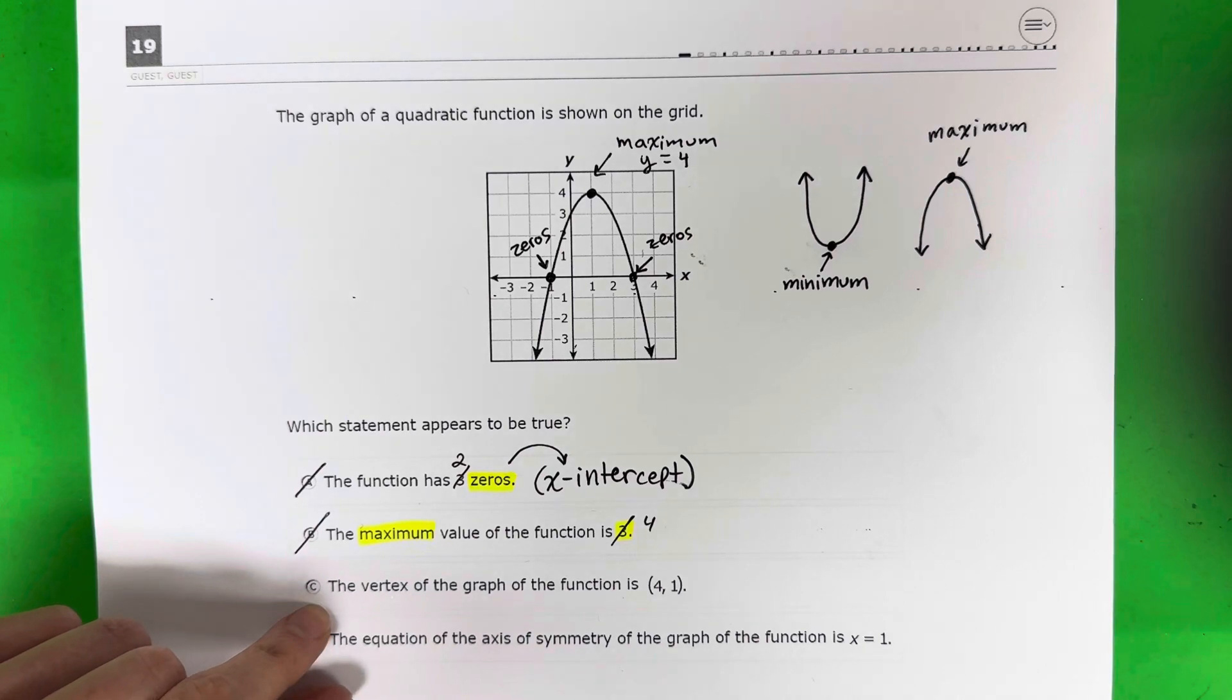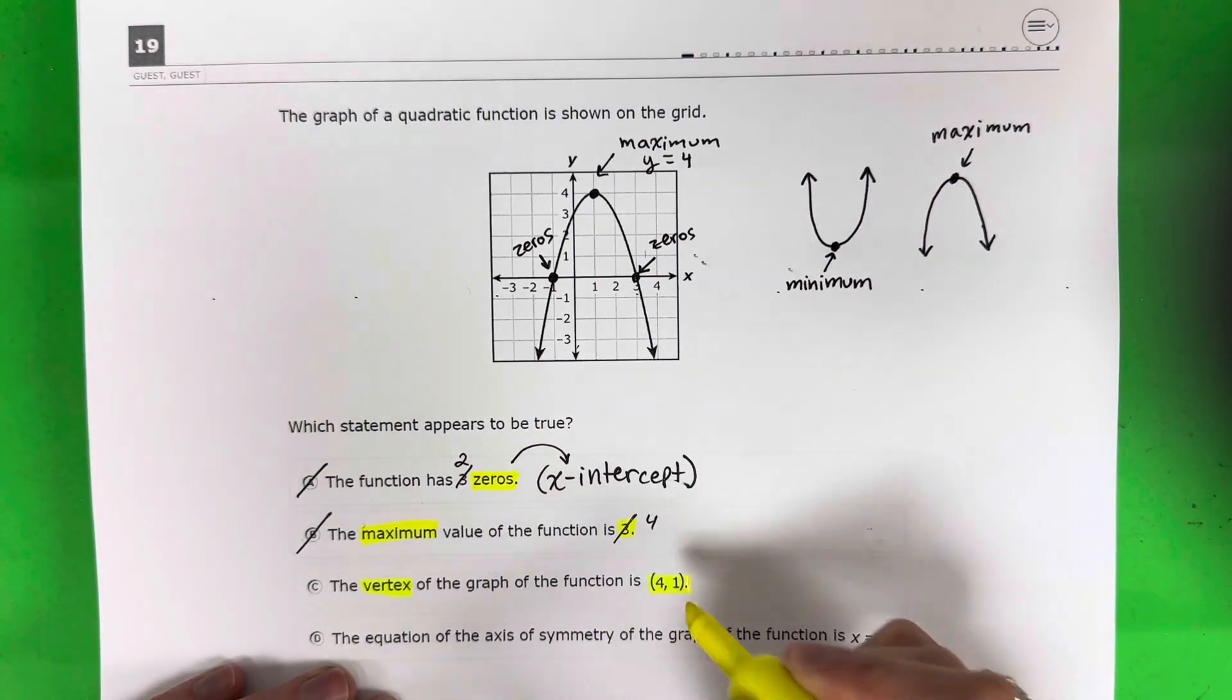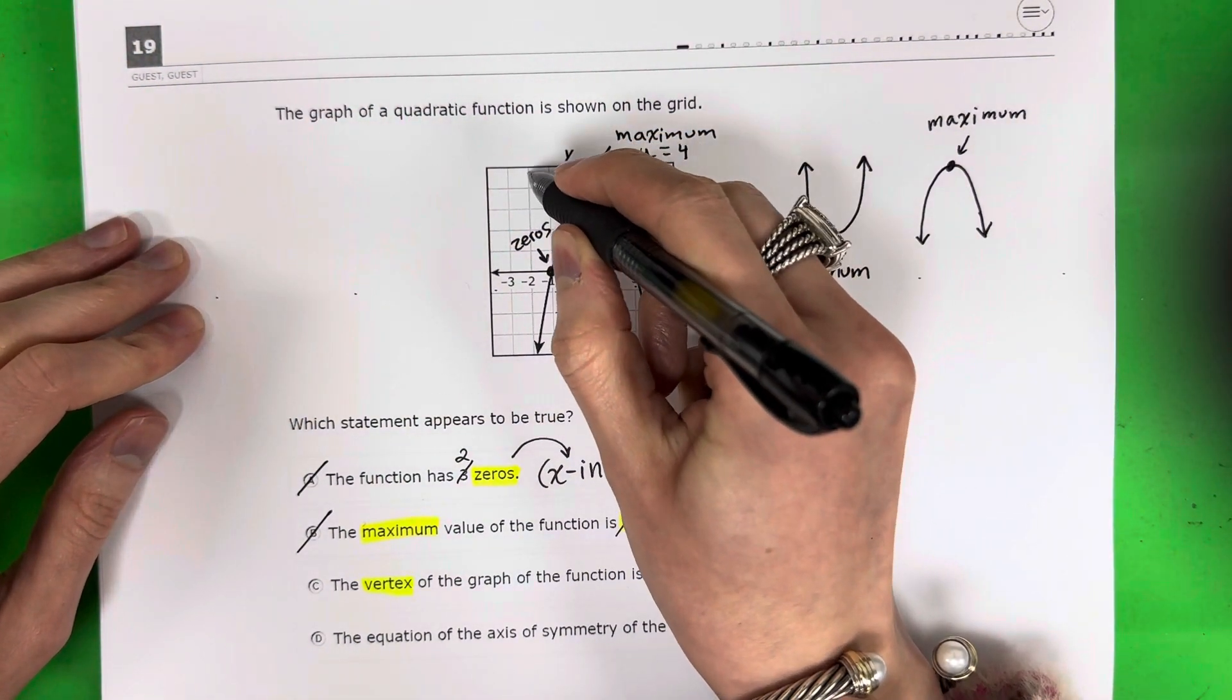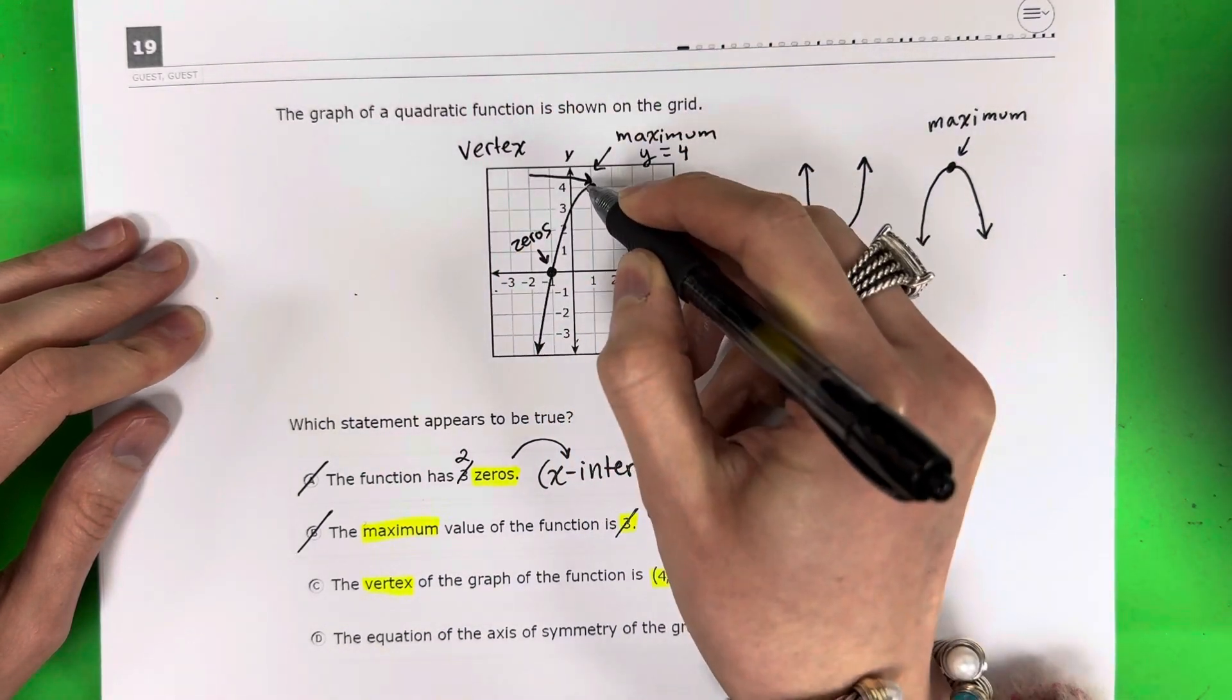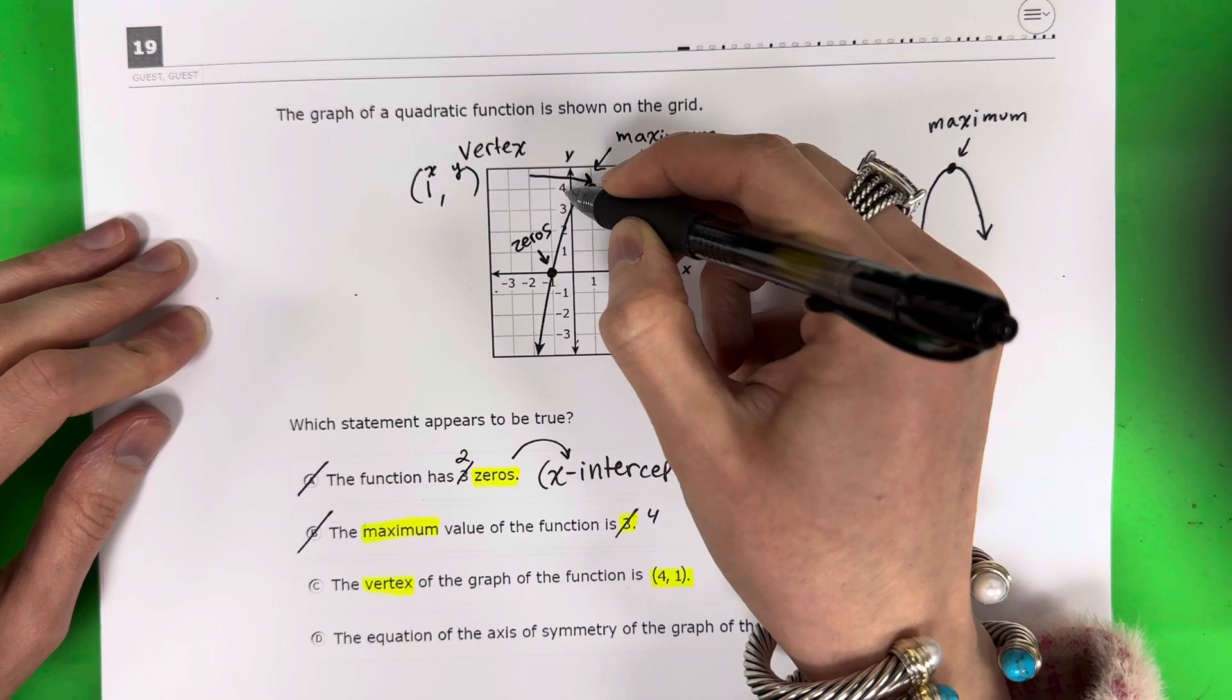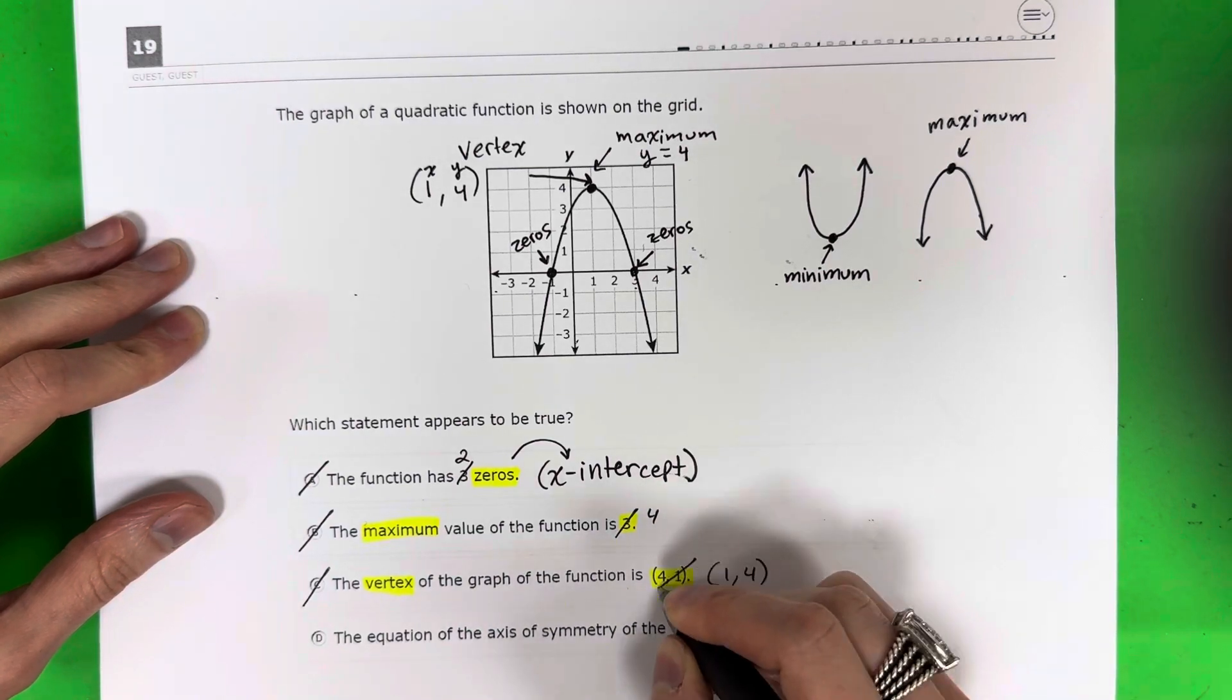Okay, let's take a look at C. The vertex of the graph of the function is (4, 1). Okay, so I have vertex (4, 1). Vertex is the center point, which we've already talked about, the minimum and maximum. And so let's go ahead and write the ordered pairs for this vertex. This vertex is x, y. x is 1, y is 4. So the vertex is (1, 4). And that is not correct. It's not (4, 1). It's (1, 4). They have it the opposite way.